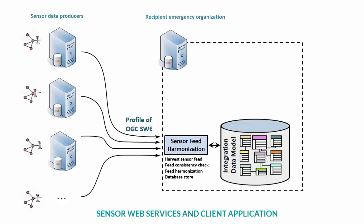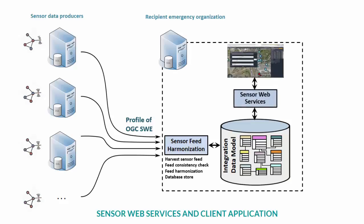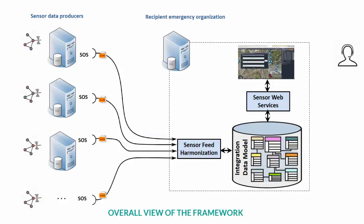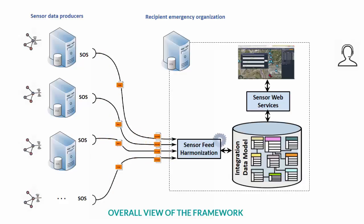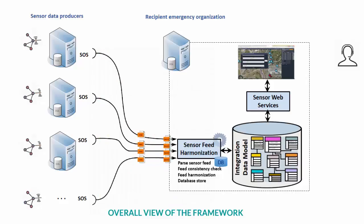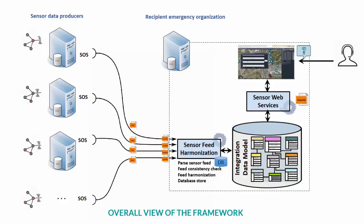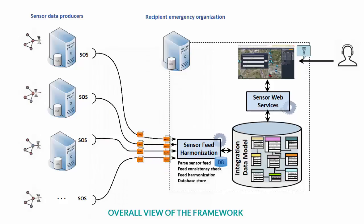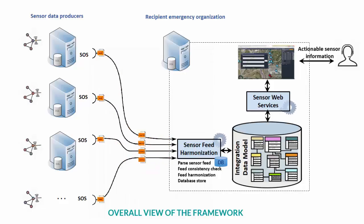Once standard-based sharing, harmonization, and integration of sensor data are enabled, actual delivery of sensor information to the end user is realized through developing a number of web services and a client application. An overall view of the framework is shown here. There is an SOS server deployed for each sensor data stakeholder. Produced sensor data is externally shared using the developed profile of SensorML and Observation and Measurement standards. Upon arrival of sensor feeds at the recipient organization, they are validity checked, harmonized, and stored in the database using the created database schema. The user can then use the client application to generate a query. The query request is processed by the associated sensor web service, which in turn consumes the unified data stored in the database. The query result is generated by the web service, returned, and visualized on the client application.